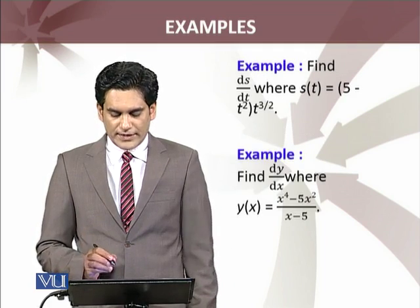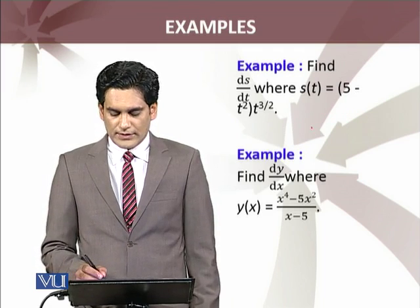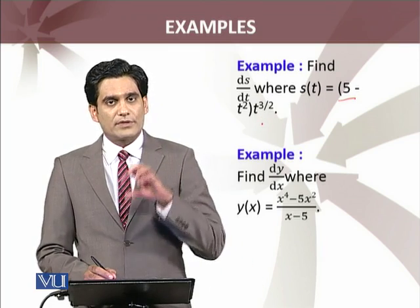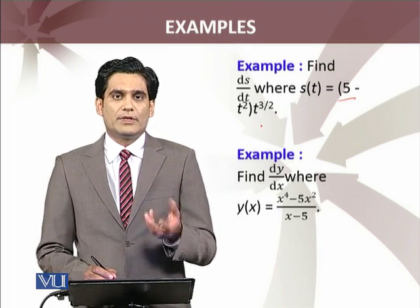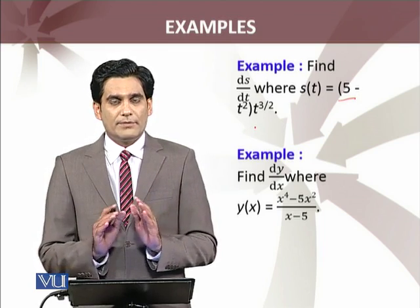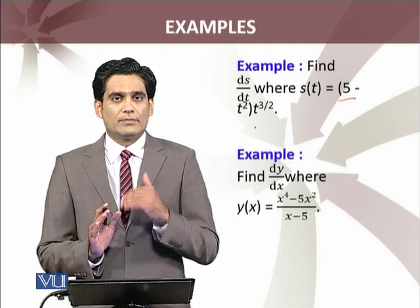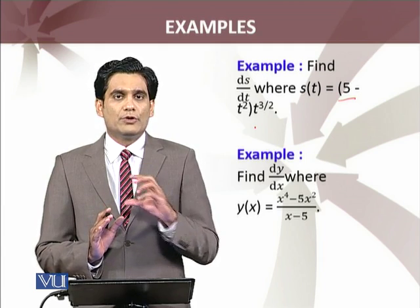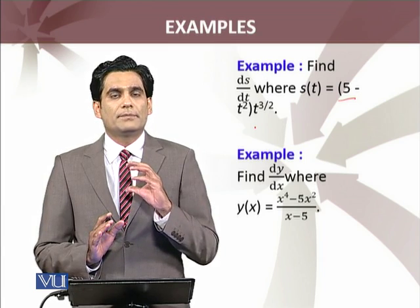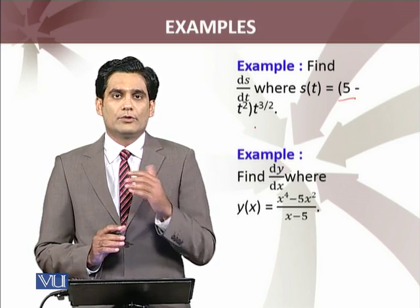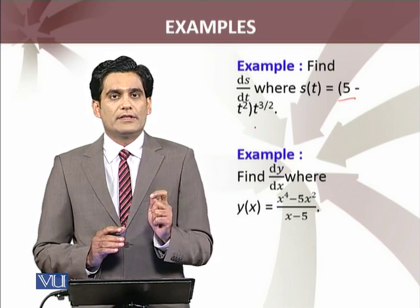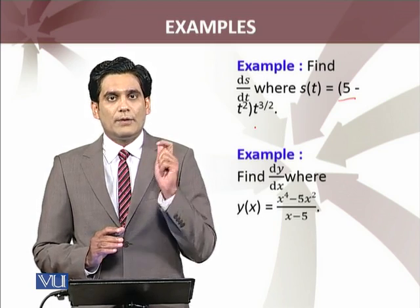The first example is: find ds/dt where s(t) equals the given expression. Here you will see five minus t squared. You will see a constant function which is differentiable, minus t squared, and a product will appear at the same time — meaning we will use the stated theorem. These are two examples provided; please apply them. In this way you will see how to apply those results without re-proving them.